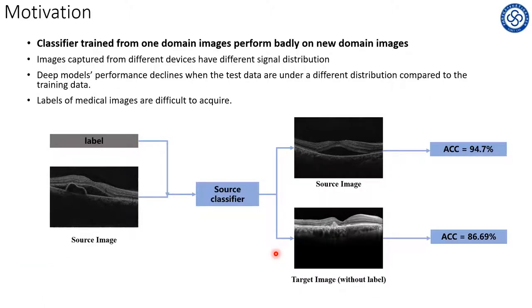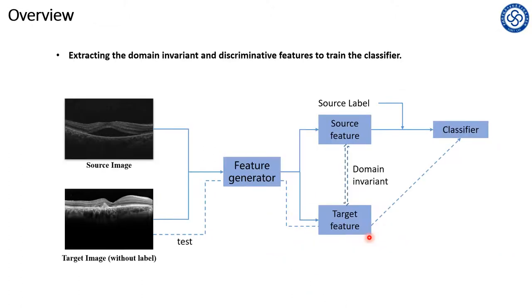First, the motivation of our work. A classifier trained from one domain images and labels performed badly on new domain images. As the label of the new images is difficult to acquire, we figured out that aligning these two domain distributions can solve this problem.